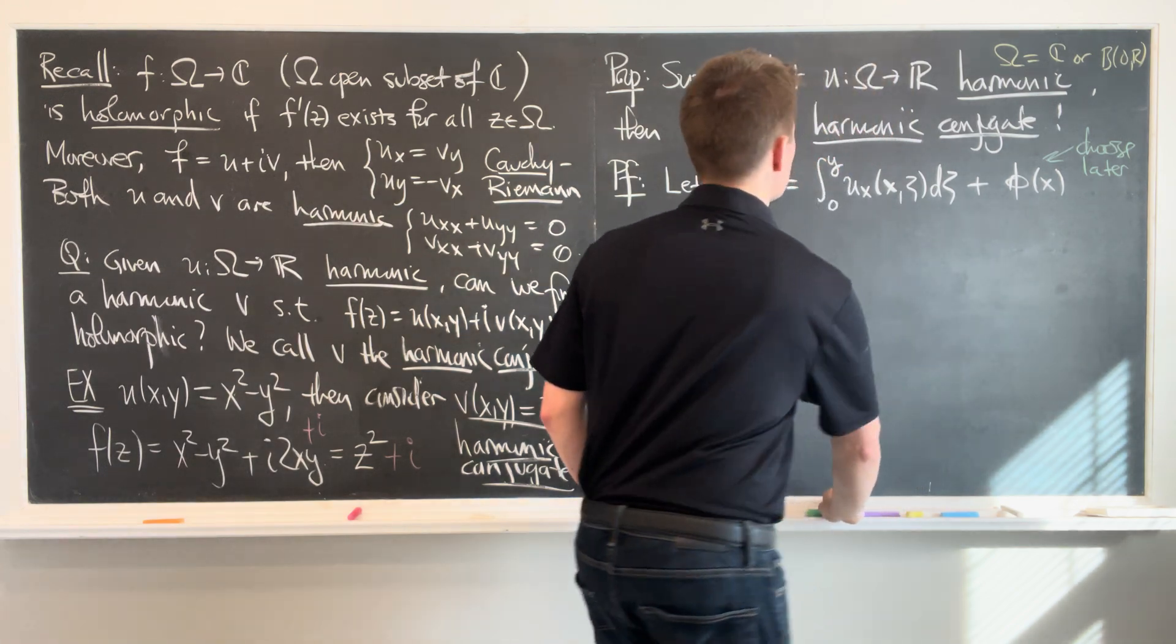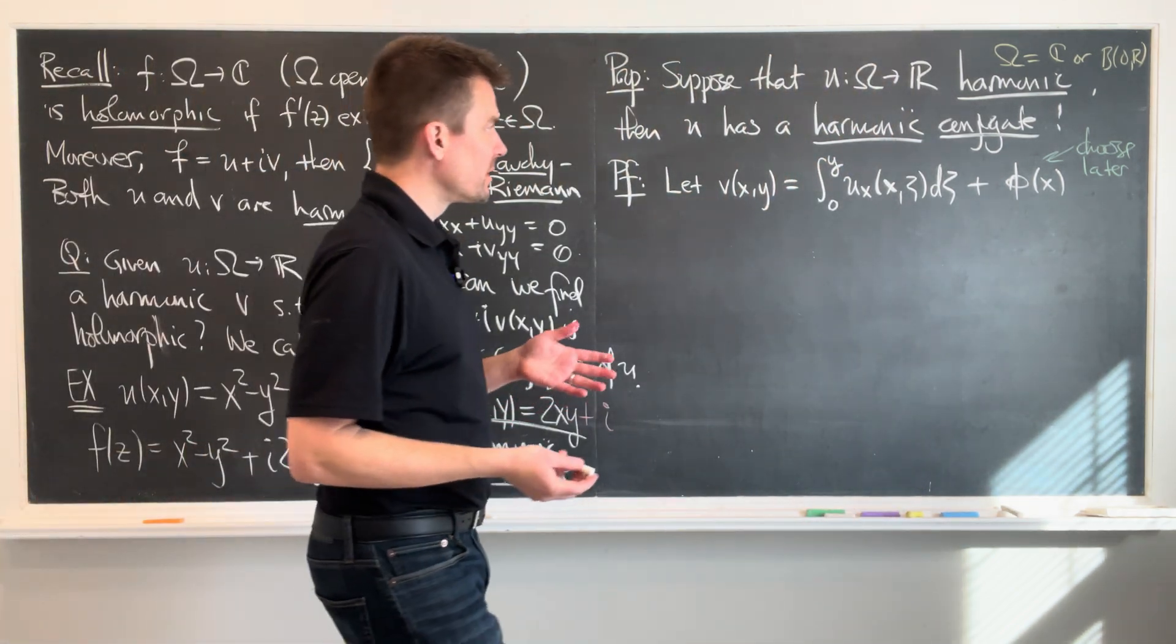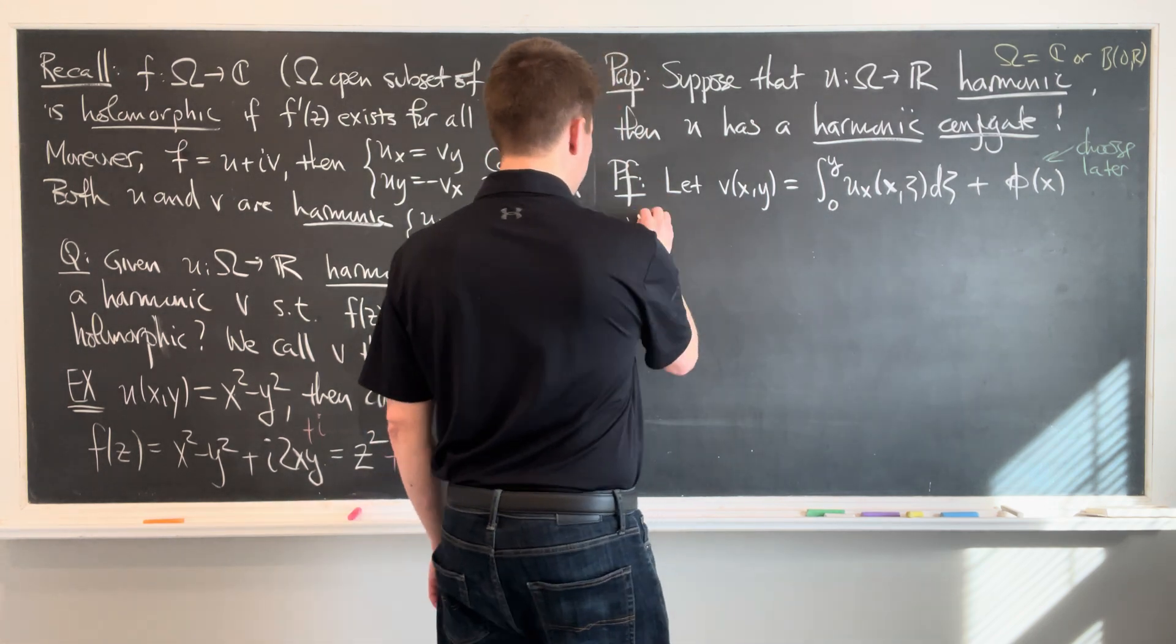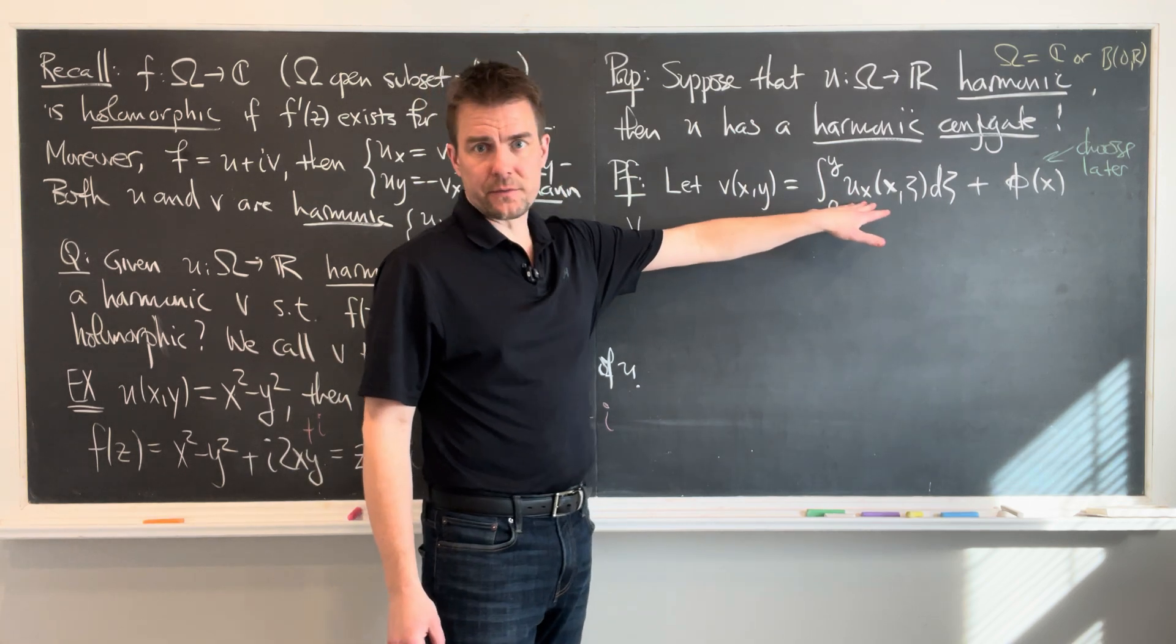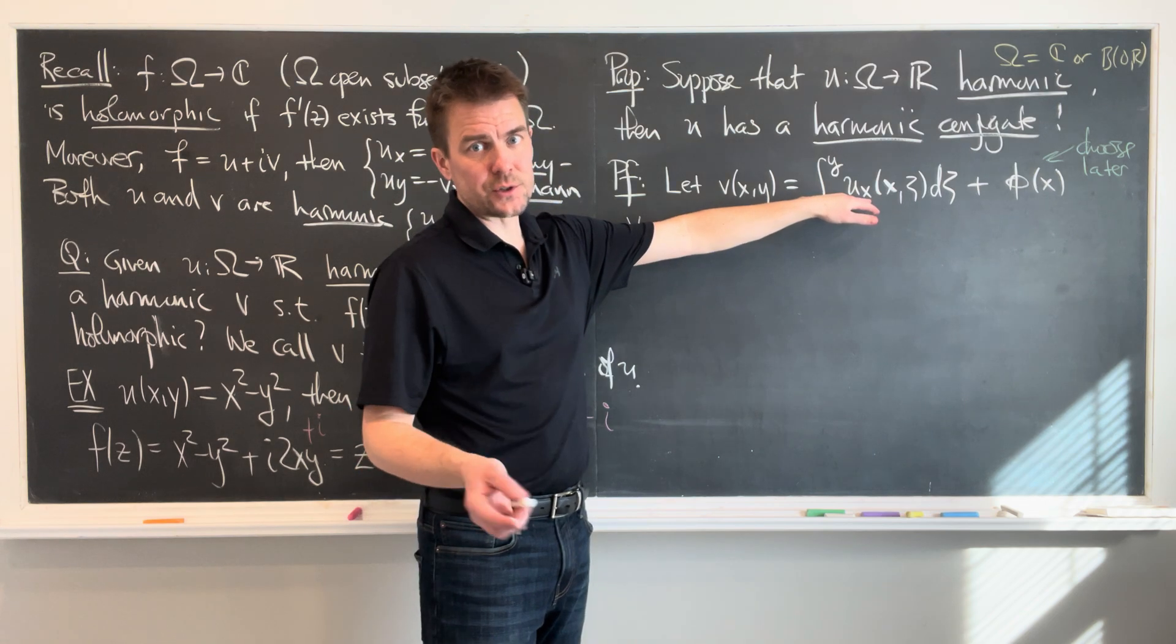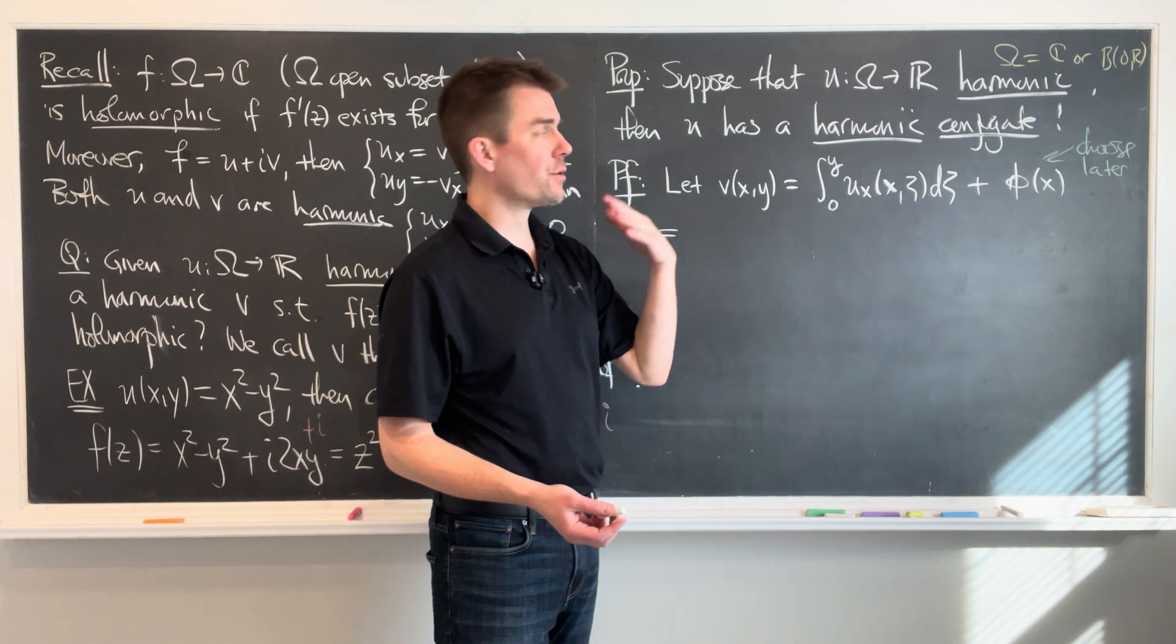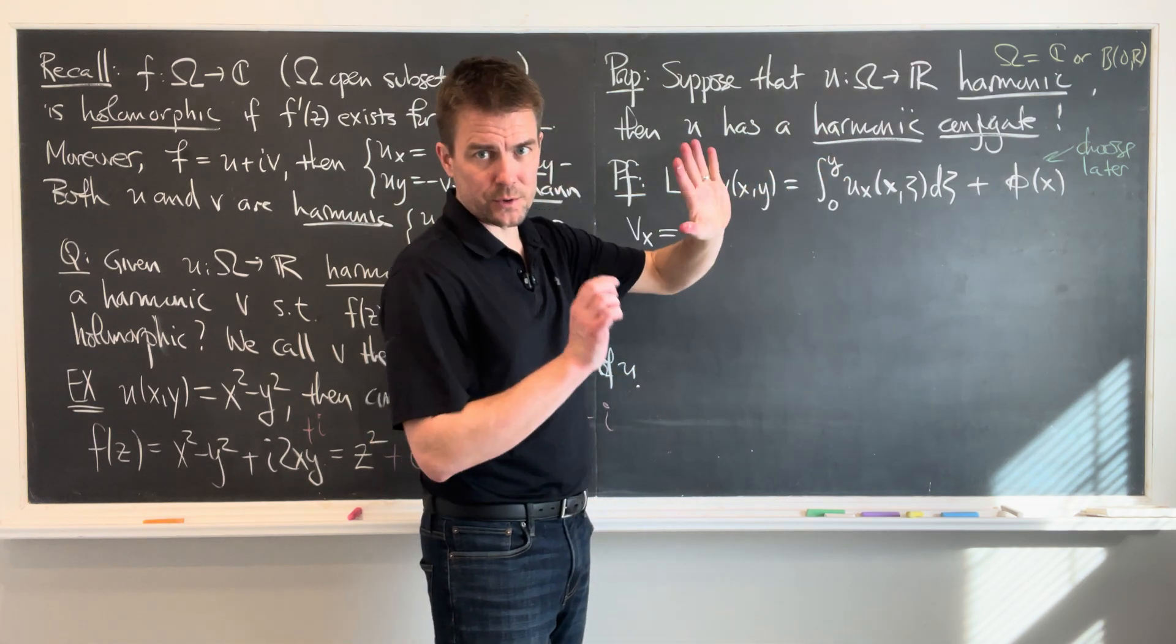All right, excellent. And so now what I'm going to do is I'm going to differentiate v with respect to x. So what is partial v partial x? Well, I need to use the Leibniz rule for differentiating under an integral sign. Of course, since u is harmonic, I know that it's at least twice differentiable in x. In particular, that allows me to pass through the derivative on the integral sign, and this is a compact set over here. So we're in good shape.